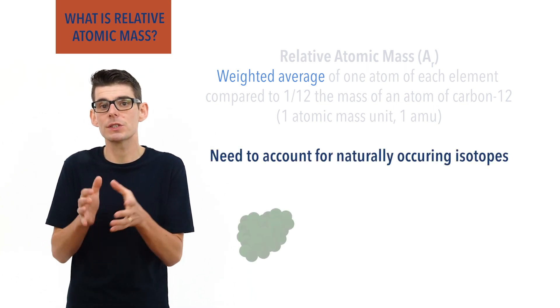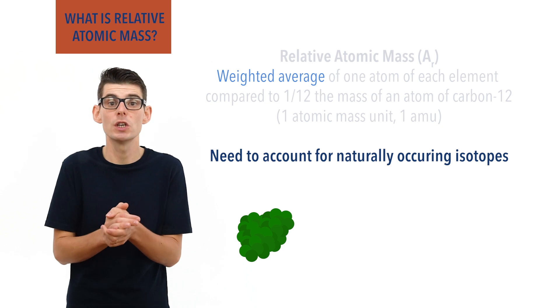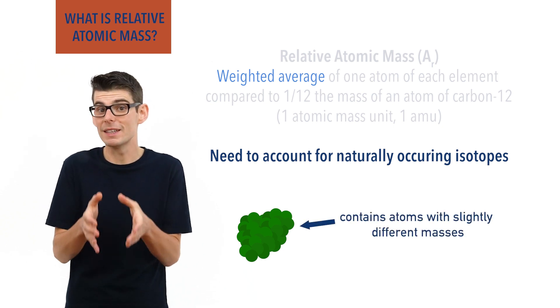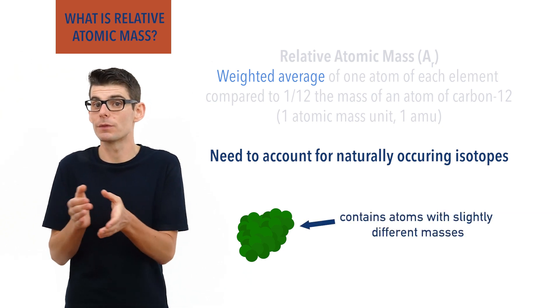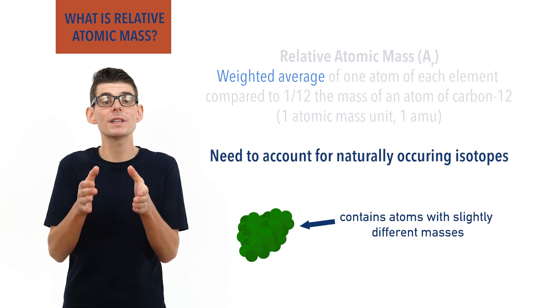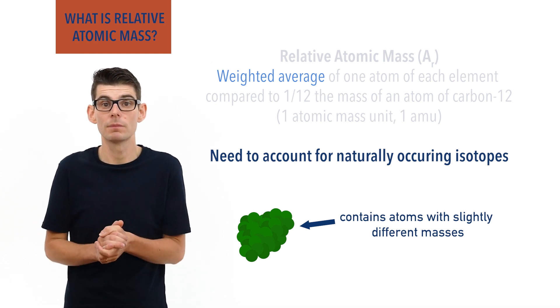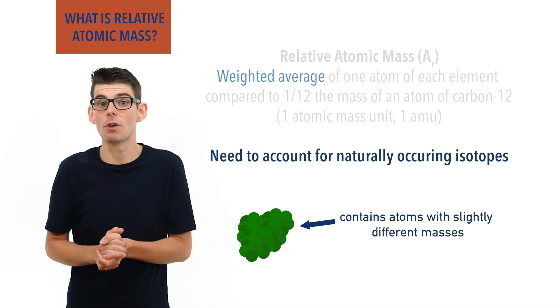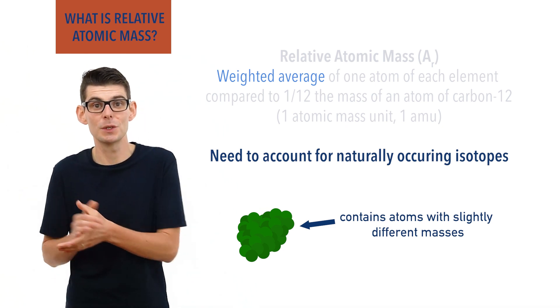Within a sample of an element some atoms will have different masses to each other. This means the average relative atomic mass of all atoms in the sample won't end up being a whole number. This is what made that problem with hydrogen earlier on when we were talking about a standard to use.